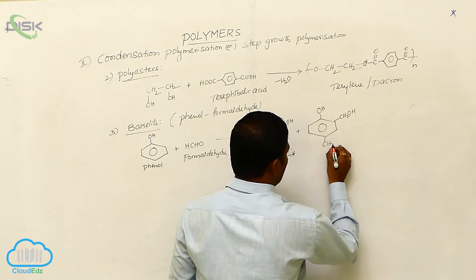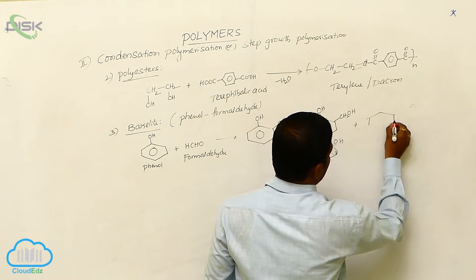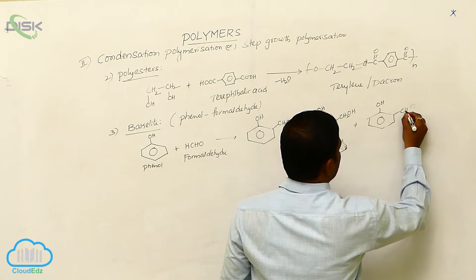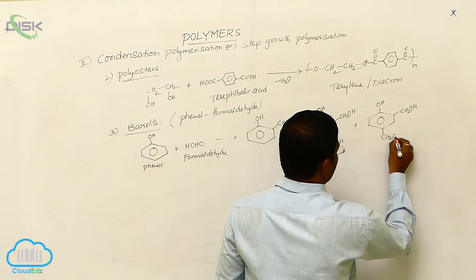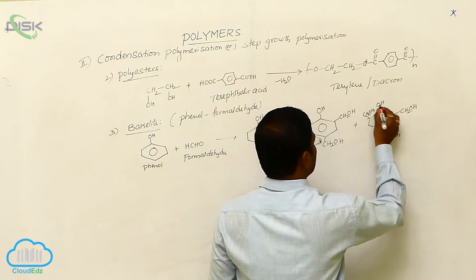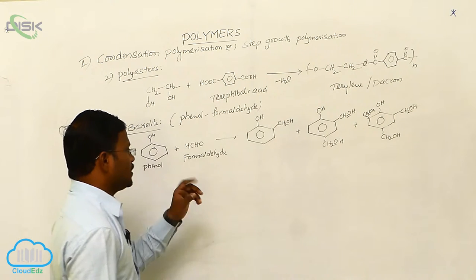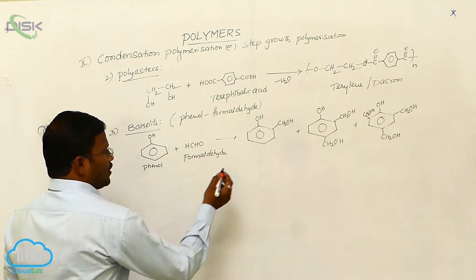This is plus OH, CH2OH, CH2OH, CH2OH, CH2OH and CH2OH. So these are the compounds generally produced when the reaction takes place between phenol and formaldehyde.